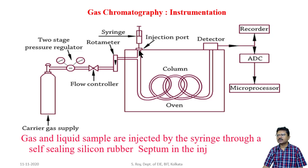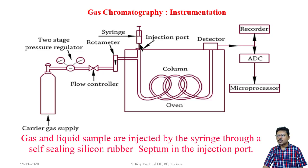Gas and liquid samples are injected by a syringe through a self-sealing silicon rubber septum in the injection port. The sample is inserted here using a syringe; when the needle is inserted into the septum the gas to be analyzed enters into the column, and when the needle is pulled out the septum is auto-refilled — meaning no porosity in the septum remains.